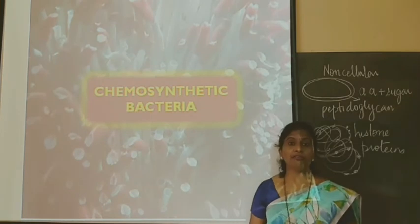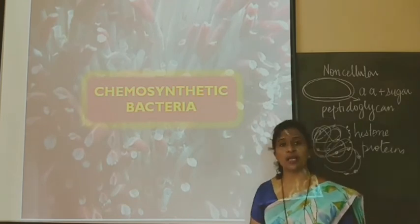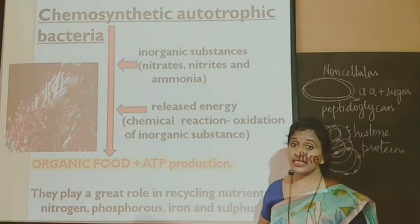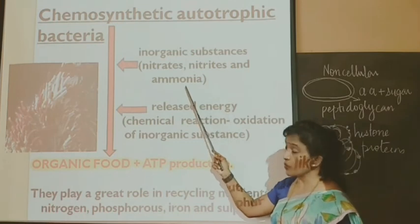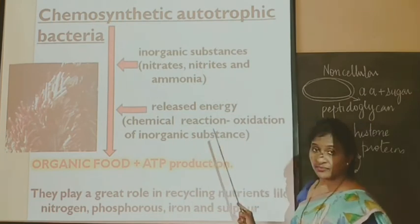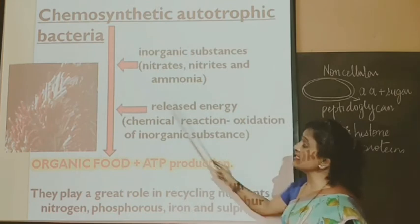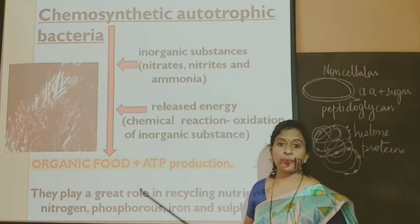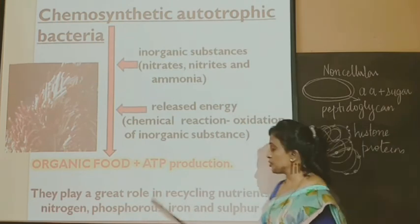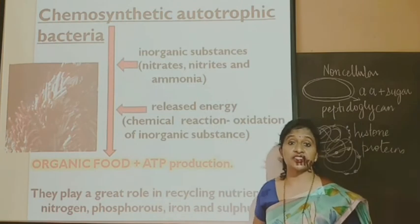The second type of Eubacteria are chemosynthetic autotrophic bacteria. Chemosynthetic means they take energy through chemical reactions and prepare their own food. The inorganic substances present in the environment — such as nitrates, nitrites, or ammonia — undergo certain chemical reactions, that is, oxidation of these inorganic substances takes place and energy is released. The released energy is taken by these bacteria to prepare their food. They play an important role in recycling nutrients such as nitrogen, phosphorus, iron, and sulfur.